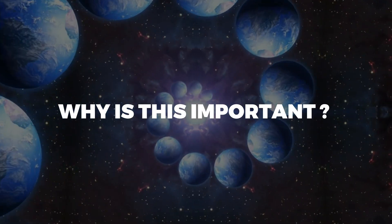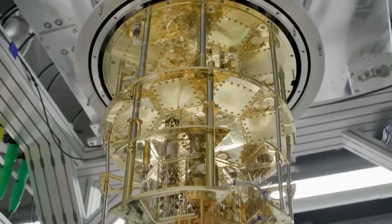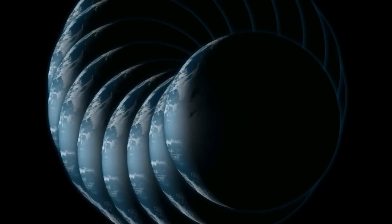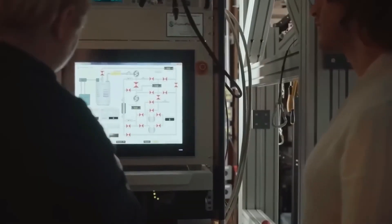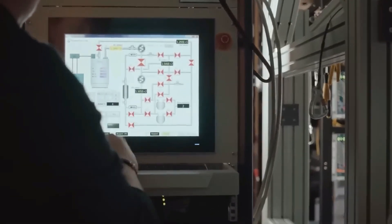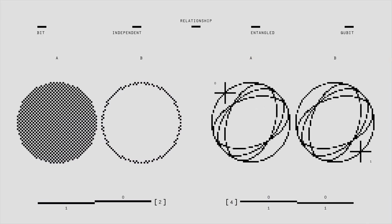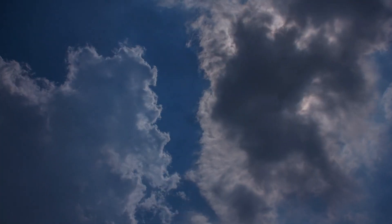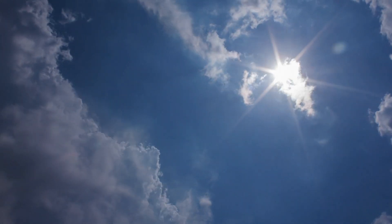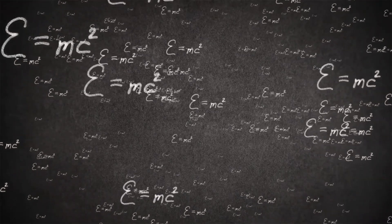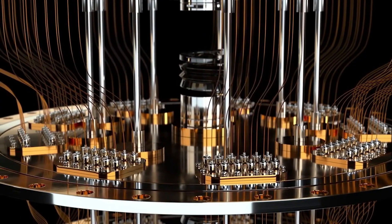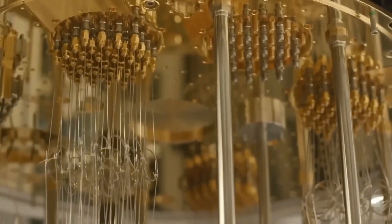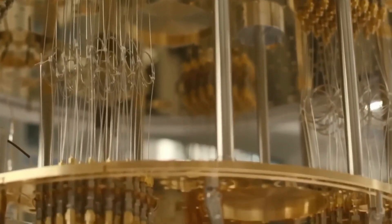Why is this important? Quantum computers have already been pushing the boundaries of what's possible. But this new experiment may have just crossed a line we can't uncross. For years, scientists have theorized that quantum mechanics could reveal hidden dimensions, alternate realities, and even reshape our understanding of time itself. But until now, these ideas were mostly theoretical. What Google's quantum computer may have done changes all that. It may have accidentally or even intentionally triggered shifts in reality that are beyond our comprehension.